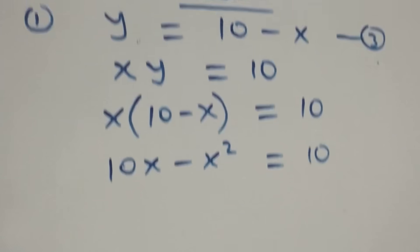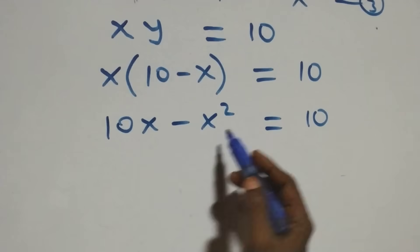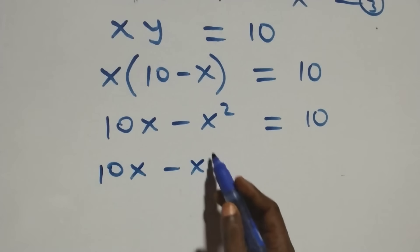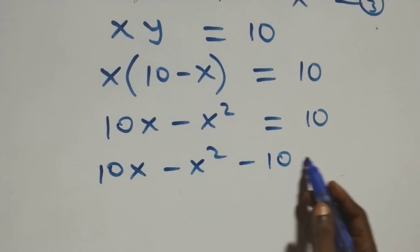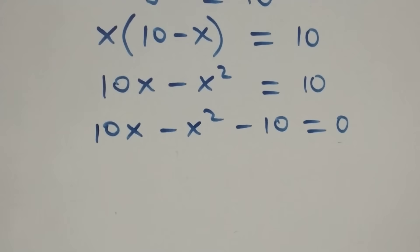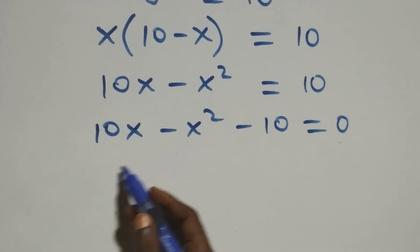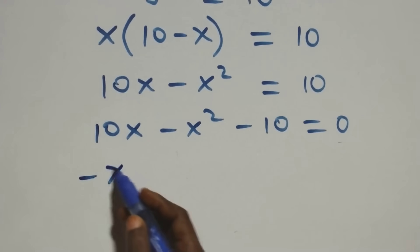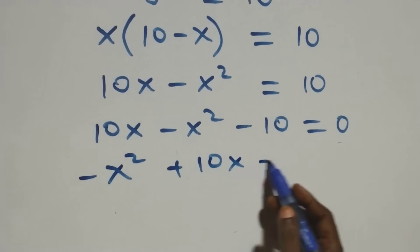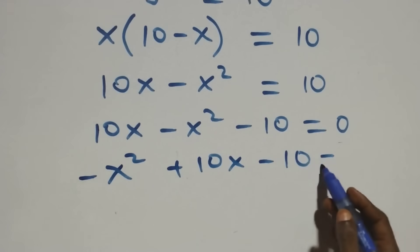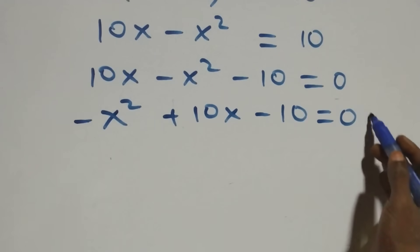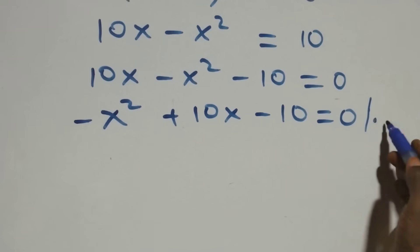We take ten to the left hand side and we have ten x minus x squared minus ten equals to zero. We rearrange this and we have minus x squared plus ten x minus ten equals to zero. To remove this minus, we multiply this equation by minus one.